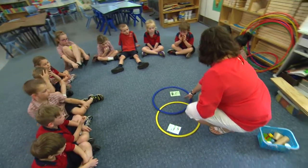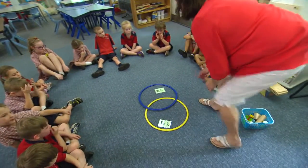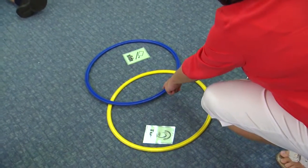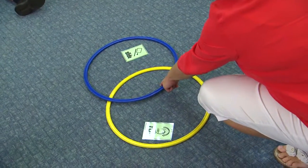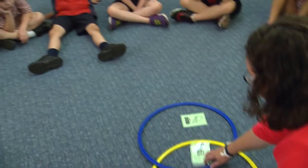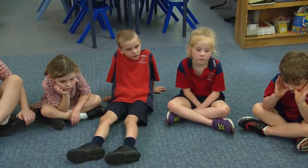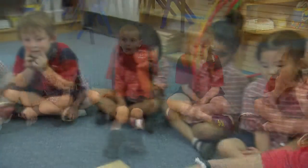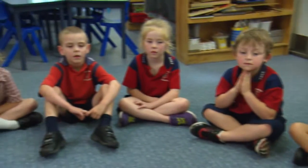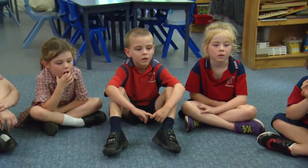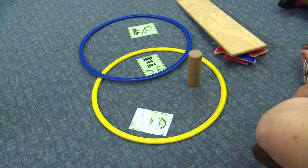We've got a slide section, we've got a roll section, and in the middle this one would be the roll and slide. We're going to have to sort all these objects into three different groups. You're going to have to test them out yourself. How would you find out if the things roll or slide or roll and slide? How could we find out, Artemis?